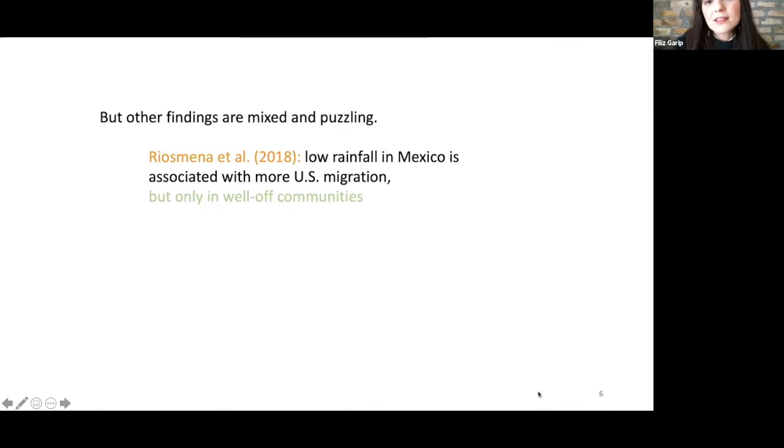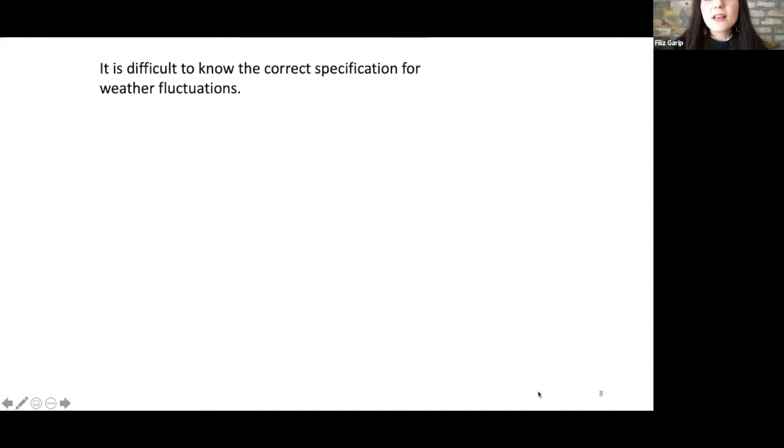But then, there are other findings that are quite mixed and puzzling. One particular example I picked is Rea Smana and colleagues' work, where they find low rainfall in Mexico brings more US migration, but it only happens in well-off communities. The argument there is it's these resourceful communities that are able to finance migration, because migrating from Mexico to the US is a costly endeavor. But then, in the same paper, they look at temperature shocks. When temperatures are too high, then they observe the opposite pattern, that they observe higher migration response only in poor communities. So basically, we have two potential weather stressors, low rainfall and high temperature, creating this different impact in less or more vulnerable communities. This is just one example pointing us to a more general problem in the literature.